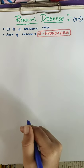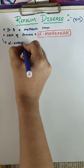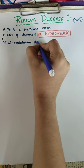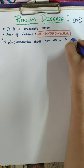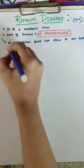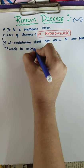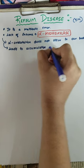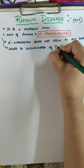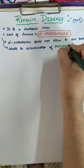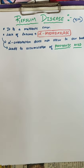There will be accumulation of a special acid called phytanic acid. Alpha oxidation does not occur in our body and leads to accumulation of phytanic acid — P-H-Y-T-A-N-I-C A-C-I-D.